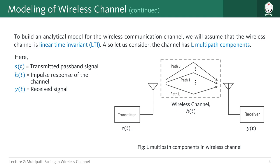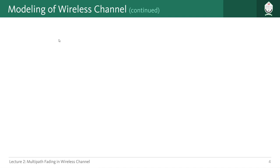Now after defining the transmitted signal s(t), we can start designing the analytical model of our wireless channel. We will assume that our wireless channel is linear time invariant (LTI). For a system to be linear time invariant, there are requirements to be fulfilled. To understand those, let us understand what linearity and time invariance mean. To fulfill the linearity property we have two requirements: superposition and homogeneity.